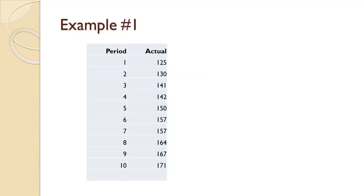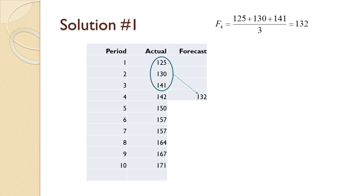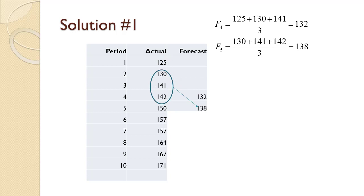Given the data shown on the slide, compute the three-period simple moving average forecast for as many periods as it is possible to do so. F4 equals 125 plus 130 plus 141, all divided by three, equals 132. Note that all the forecasts in this video are rounded to whole numbers. F5 equals 130 plus 141 plus 142 divided by three equals 138. Notice how the three periods being averaged moves down — that is why it's called a moving average.